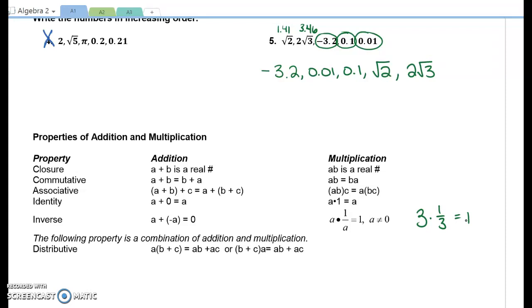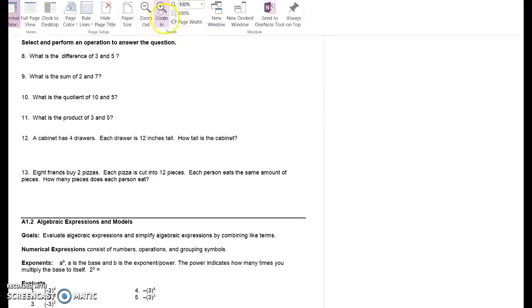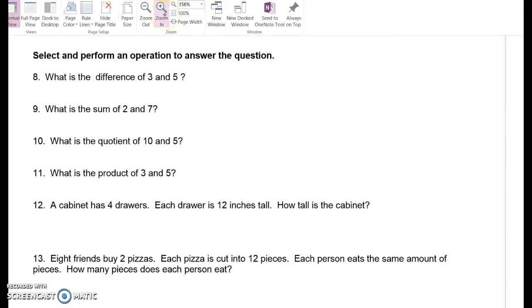So on your assignment, it's going to say which property is being used. Look at your notes. Match up the properties. Done. Next page. I would like you to try numbers eight through 13 on your own. It's just asking you to remember what the words difference, sum, product, quotient mean, and then a couple other quick problems. So try eight through 13. We'll go over them in a few minutes.